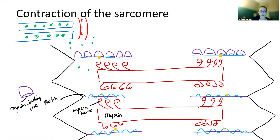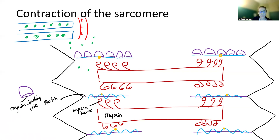The thin filament is also going to have two other proteins: tropomyosin and troponin.